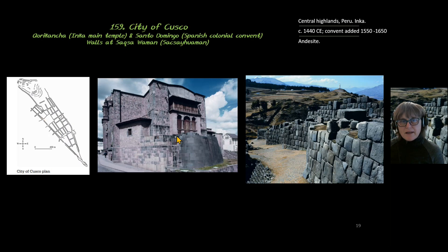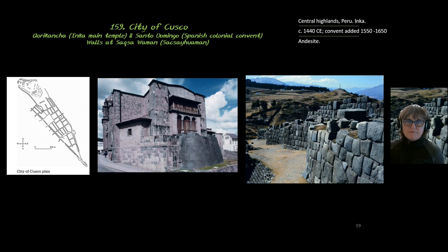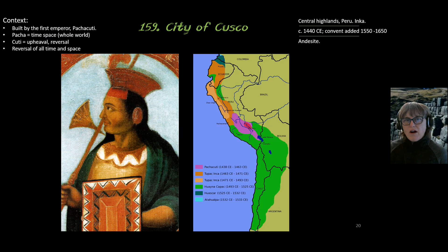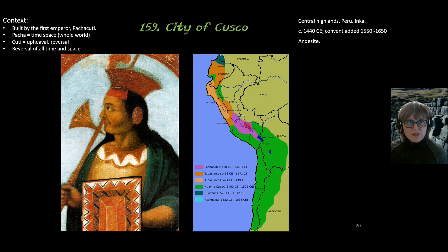We're dealing with the city plan, we're dealing with the Coricancha — the Incan main temple — and then the walls of Sasquawaman. All of the context is the same for each of the three images, and actually for every Inca piece. They all focus around Emperor Pachacuti, who is the first Emperor of the Incan Empire.